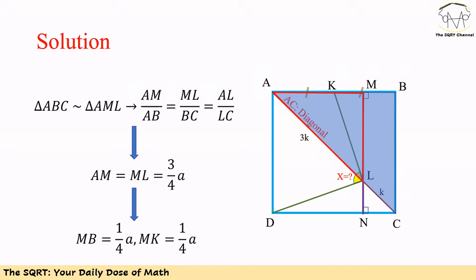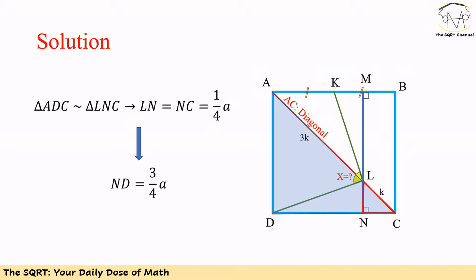Remember K was the midpoint of AB, so we can show that MB = MK = a/4. Now let's focus on triangle ADC in blue and triangle LNC with the red border. These two triangles are also similar, since angle C is common and angle D = angle N = 90 degrees. Using this similarity, we can show that LN = NC = a/4.